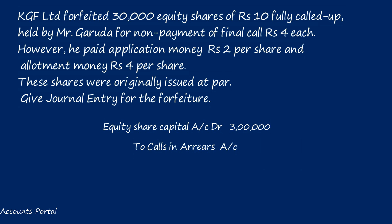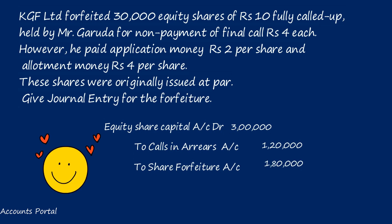Solution: On forfeiture, whatever was credited to share capital must be reversed. Equity Share Capital account Dr. = 30,000 shares × called-up value rupees 10 = rupees 3,00,000. To Calls in Arrears account: 30,000 × rupees 4 (amount not paid) = rupees 1,20,000. To Share Forfeiture account: Garuda paid rupees 2 (application) + rupees 4 (allotment) = rupees 6 per share; 30,000 × 6 = rupees 1,80,000.